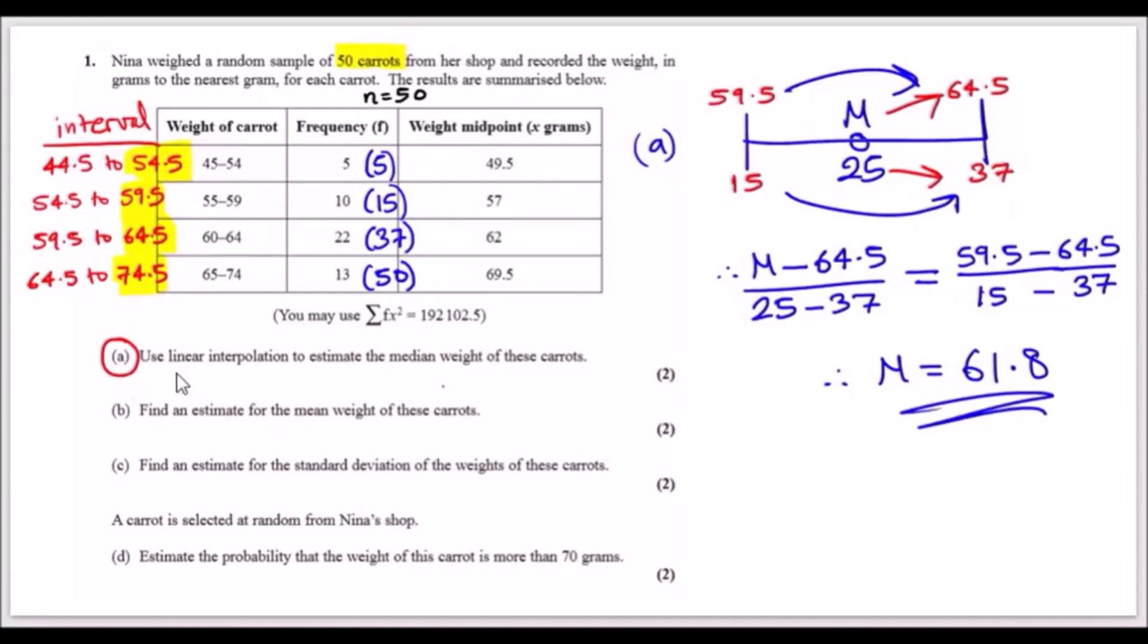Part a: use linear interpolation to estimate the median weight of these carrots. To find the median weight, we need to realize that we had 50 carrots and the median is the middle weight, so the halfway mark, 50 over 2, so it'll be the 25th carrot. My tip is to always look at the frequency and do the cumulative frequency in brackets next to it. You'll notice that the 25th carrot has to be between 15 and 37.